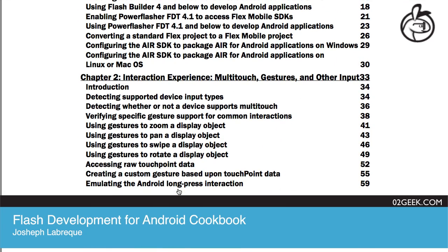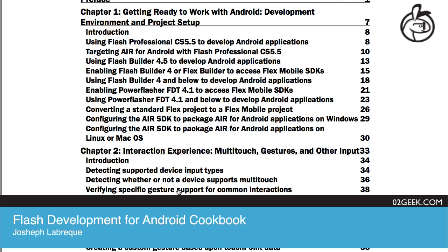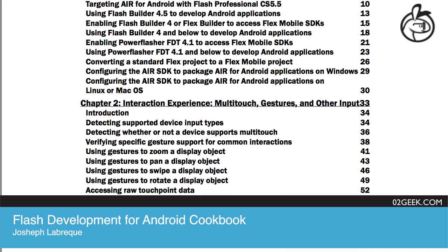The main thing with Chapter 1 is there's some information about updates to AIR. The book was written targeting AIR version 2 and Android 2.2 and 2.3. There have definitely been new releases of Adobe AIR for Android since then, so there are additional capabilities you might want to educate yourself on.